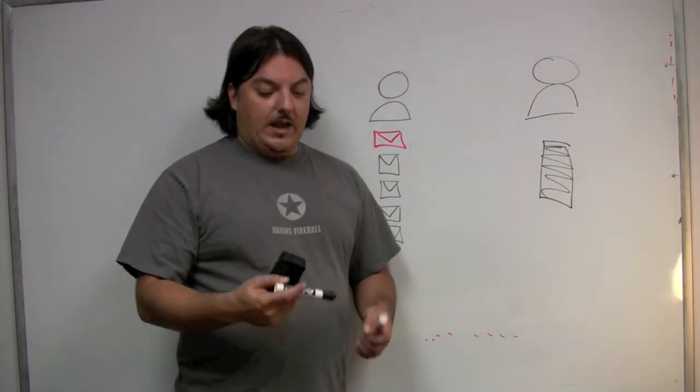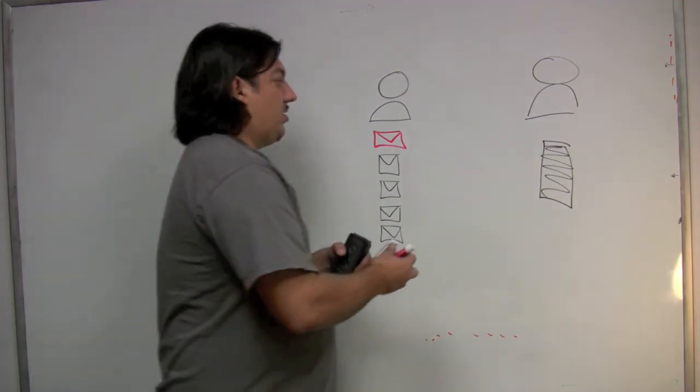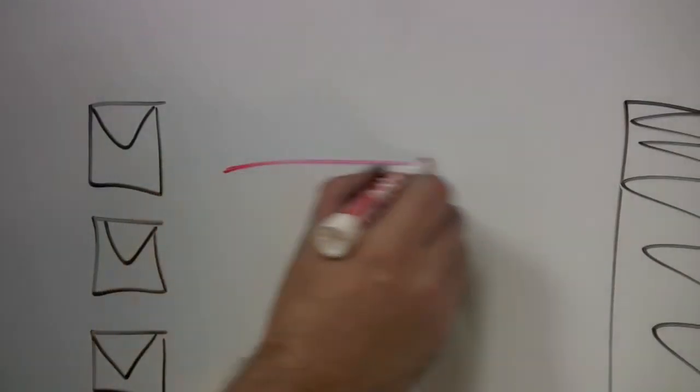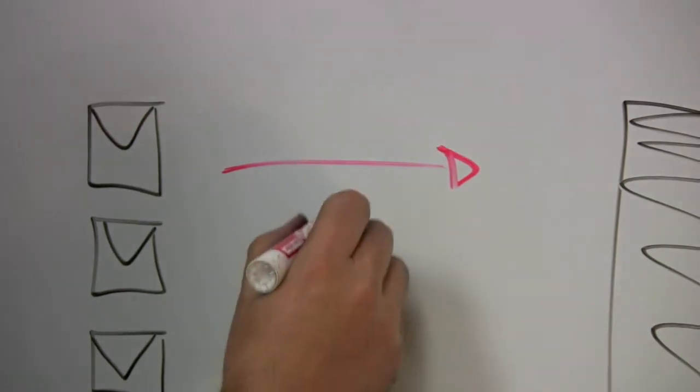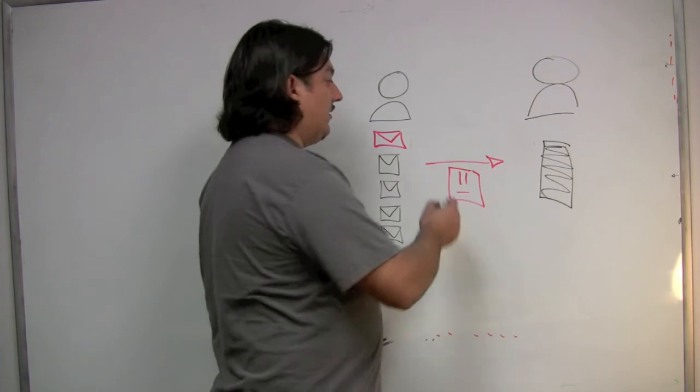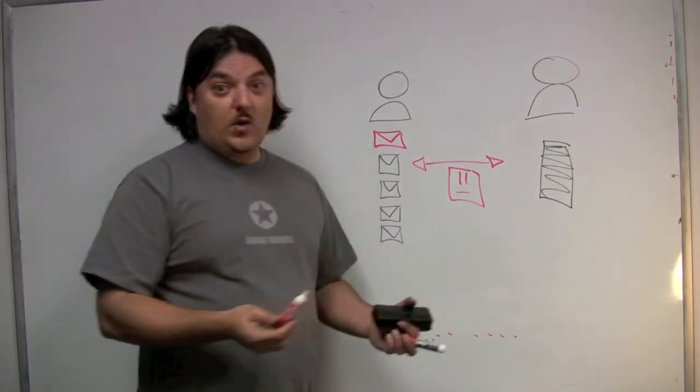And it even works on outgoing messages. So if you send out a message to your friend and you tell Stacy, hey, I'm waiting on a response for this in three days, she'll know. And she'll ping you if the guy doesn't get back to you in time. Cool, huh?